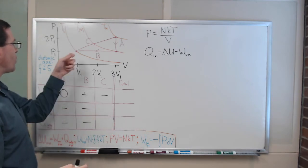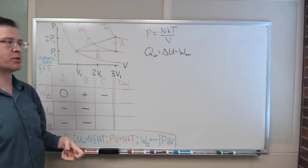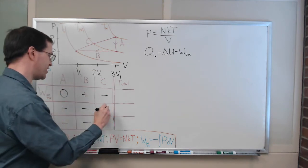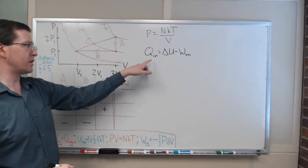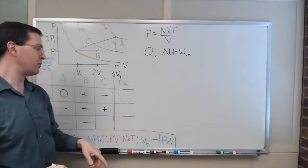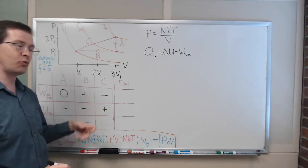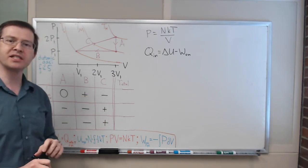All right. Change in energy. Well, we're going from the lowest temperature to the highest temperature. Temperature is going way up. Energy is going way up. This must be positive. And finally, for heat, Q equals delta U minus W. We've got a positive minus a negative will be even more positive. So, that's what we have for this step.